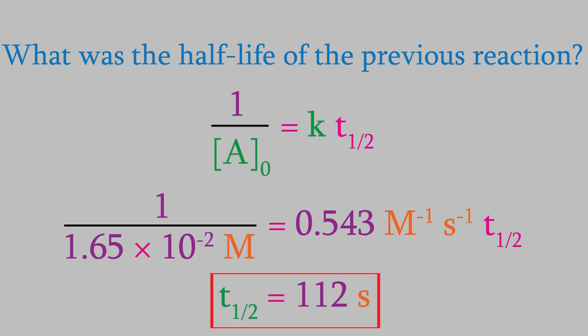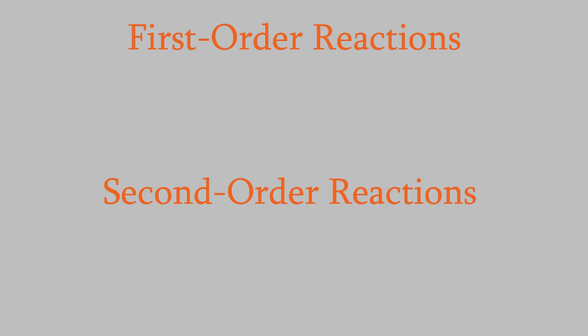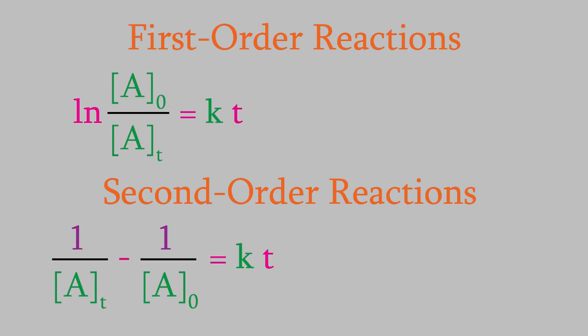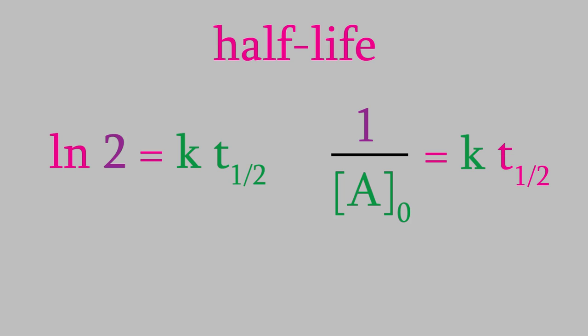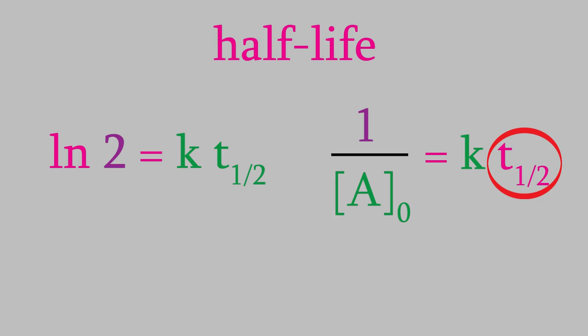Let's review what we know so far. We've looked at both first and second order reactions, and for each we got an equation tying reactant concentrations to reaction time. We also got half-life equations for each type. The two half-life equations are very different — the one for second order reactions depends on the initial concentration. The higher the concentration, the shorter the half-life. That's very different from first order reactions, where the half-life is always the same no matter how much material you start with. Clearly the way the half-life behaves depends a lot on the reaction order.